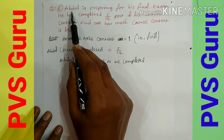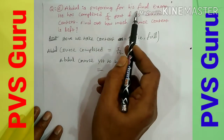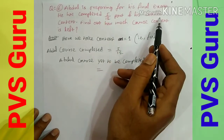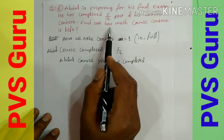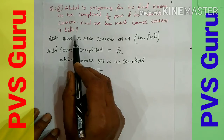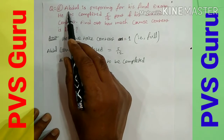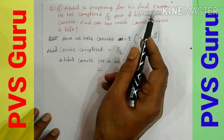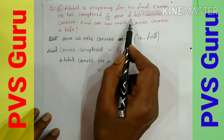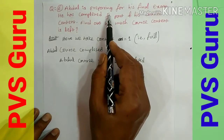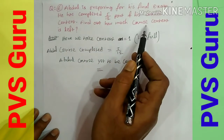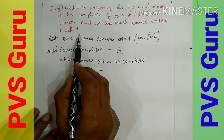Question number 6: Abdul is preparing for his final exam. He has completed 5/12 part of his course content. Find out how much course content is left.